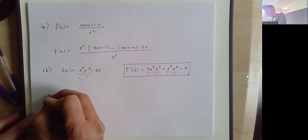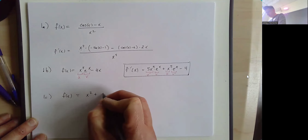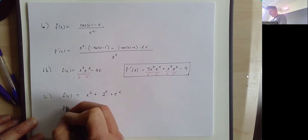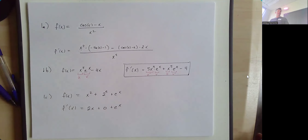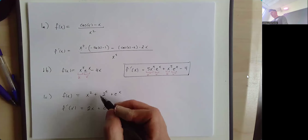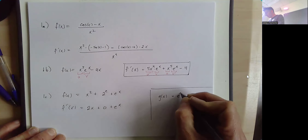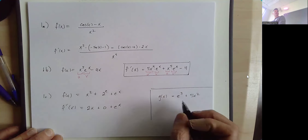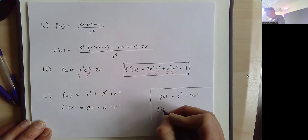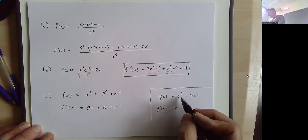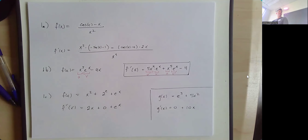Let's look at 1c. The function is f of x equal to x squared plus 2 to the e plus e to the x. The derivative is 2x plus zero plus e to the x, because 2 to the e is just a constant and the derivative of a constant is zero. The trickier scenario would be g of x equal to e to the third plus 5x squared — it's easy to convince yourself that the derivative of e to the third is e to the third, but it's not. The derivative of e to the third is zero, just like the derivative of 2 to the e is zero. There are no x's there; it's a constant, its derivative is zero.